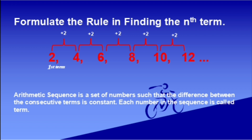Each number in the sequence is called a term. We have two as the first term, four as the second term, six as the third term, eight as the fourth term, ten as the fifth term, twelve as the sixth term, and so on and so forth.